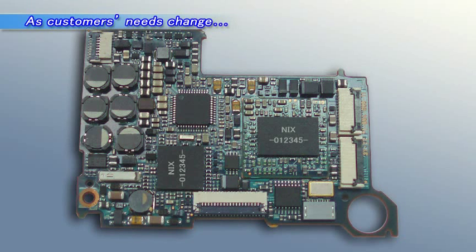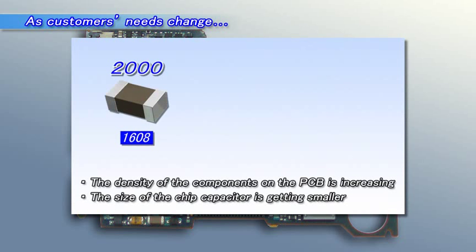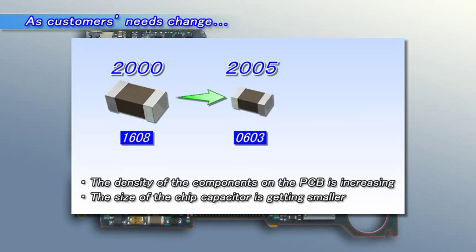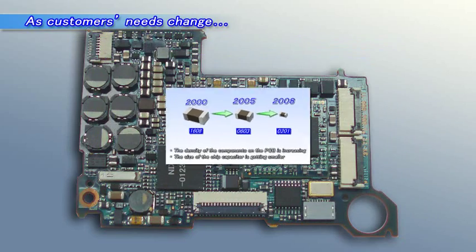The most popular component size in 2000 was 1608, and in 2005 it changed to 0603. In 2008 it will be 0201. The trend is that the size of components continues to get smaller and the density of PCB components continues to increase.